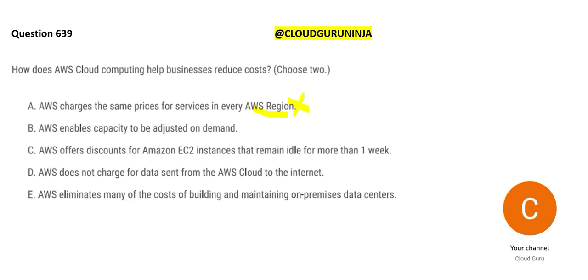Option B suggests that AWS enables capacity to be adjusted on demand — yes, you can adjust the capacity on demand. For example, on EC2 instances you have a feature called auto scaling. If you are hosting a web application on EC2 and you start with four instances and the number of concurrent users increases, you can add four, ten, or twenty more instances to manage the load. This statement is perfectly true.